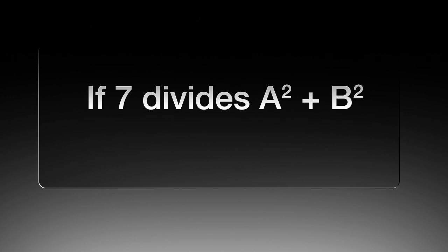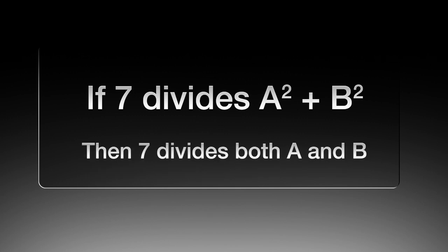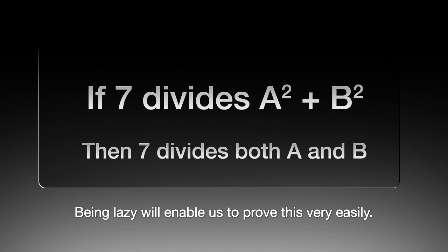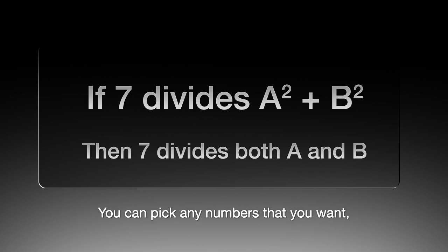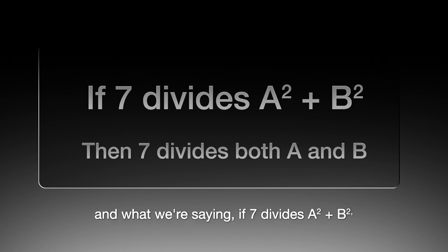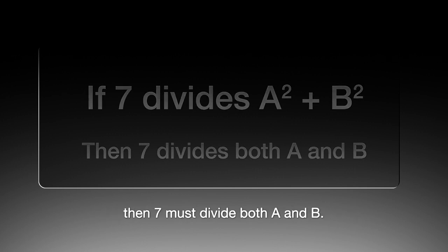Okay now let's move on and look at what we're going to prove today by being lazy. If 7 divides A squared plus B squared, then 7 divides both A and B, and being lazy will enable us to prove this very easily. So we take any numbers, you can pick any numbers A and B you want, and what we're saying is that if 7 divides A squared plus B squared then 7 must divide both A and B. So let's have a look at an example.